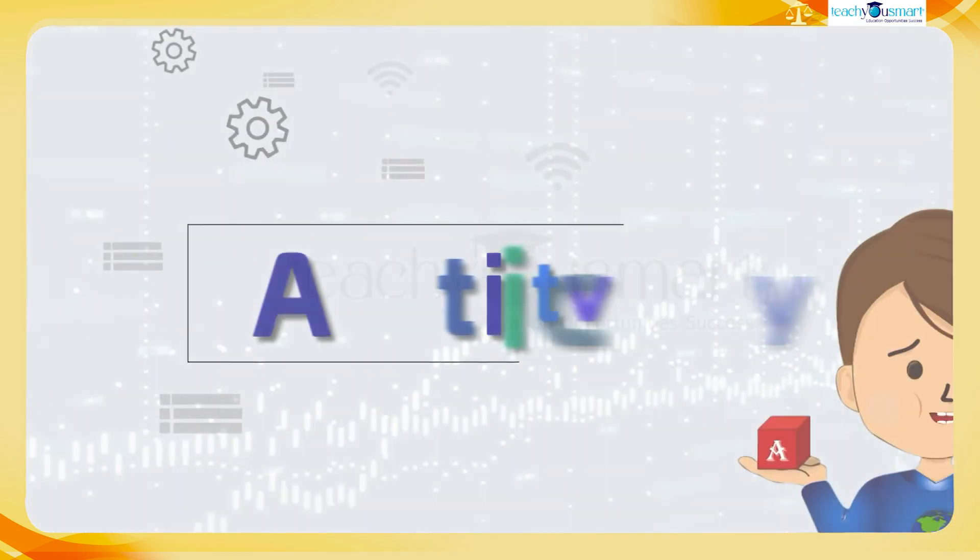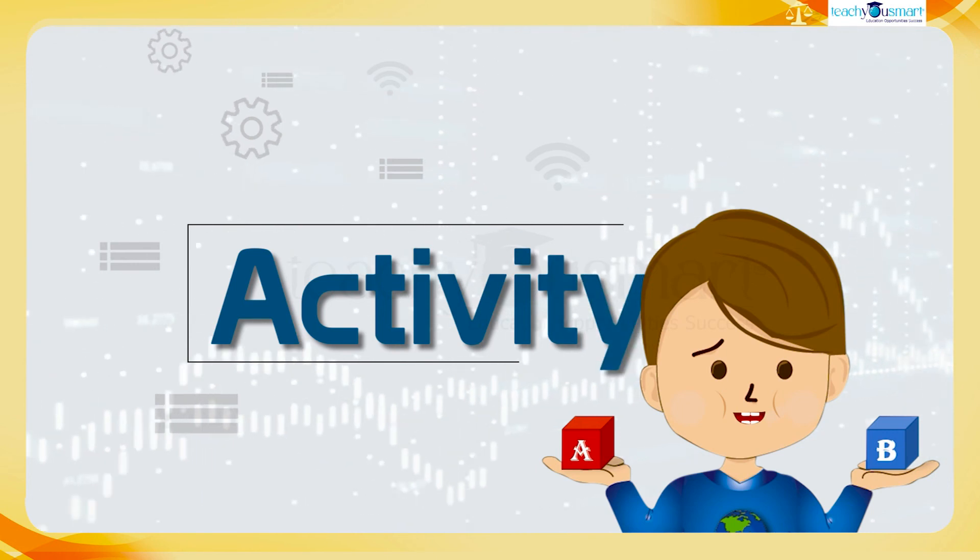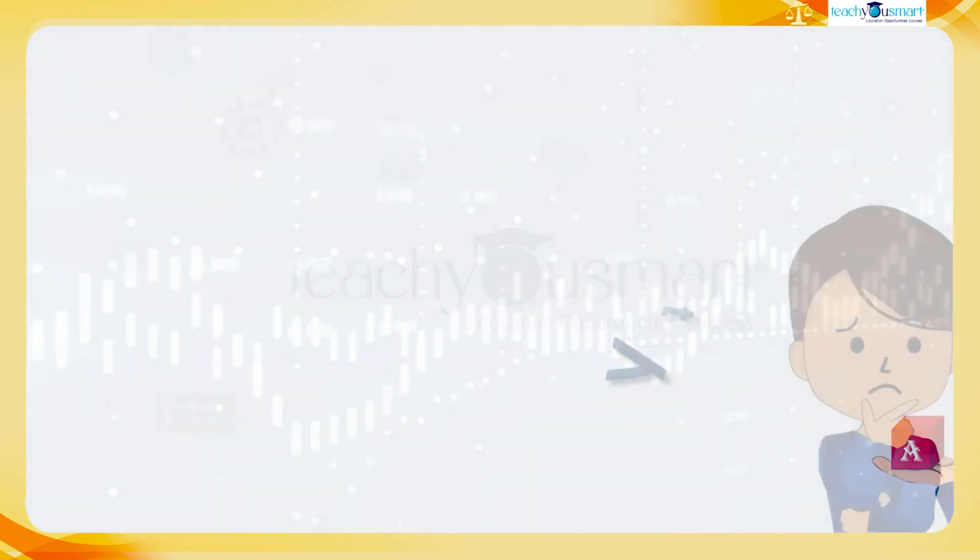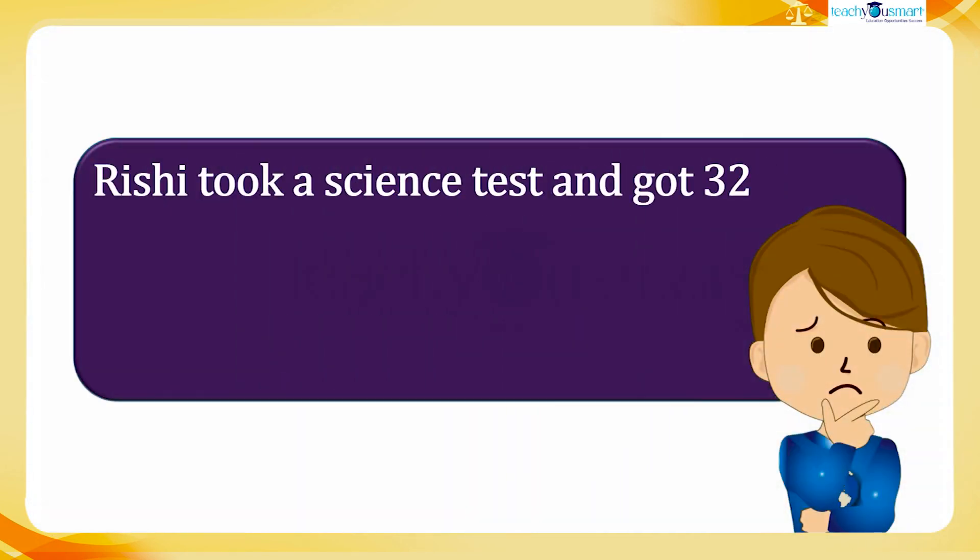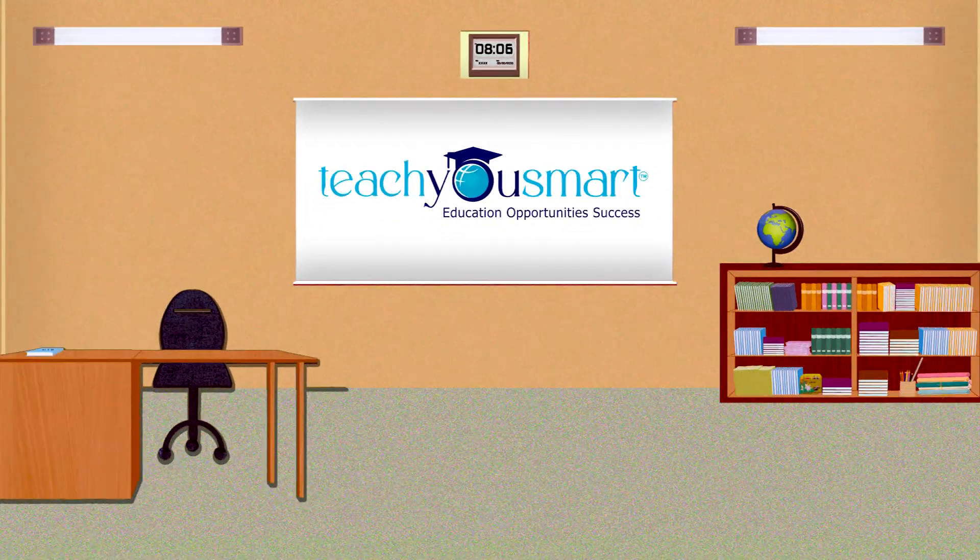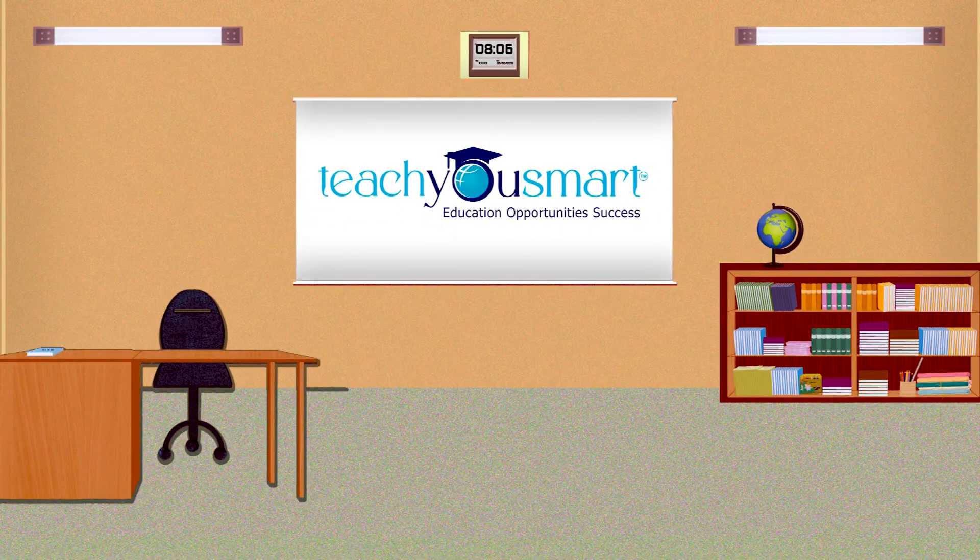Before winding up, let's check how much you understood by doing an activity. Rishi took a science test and got 32 correct and 18 incorrect answers. What was the percent of correct answers? That's all for now. See you all in the next class with another interesting topic.